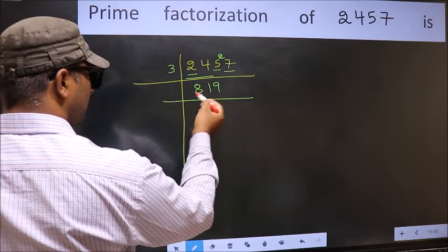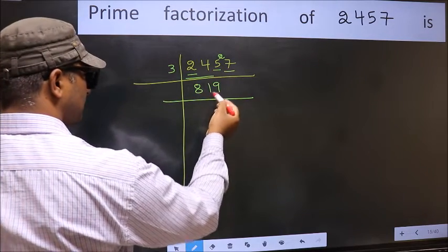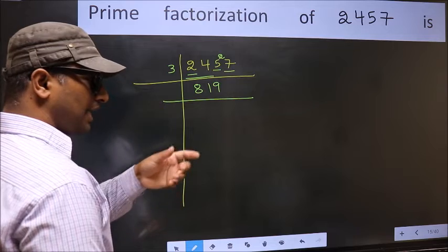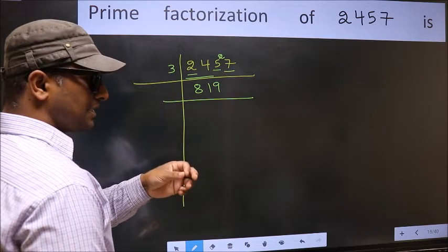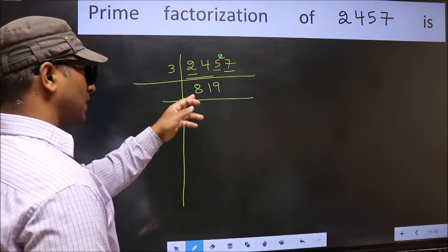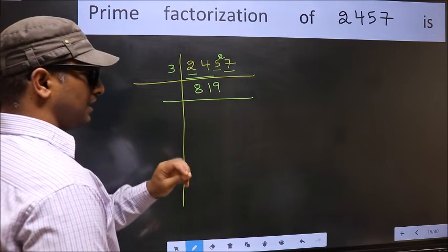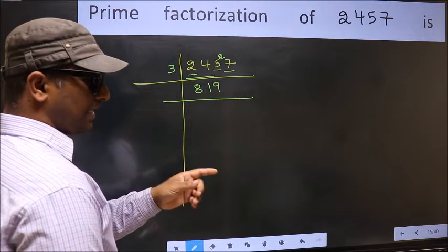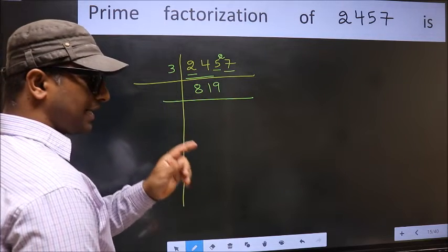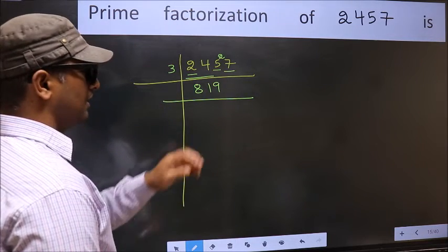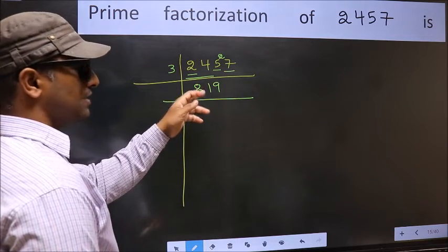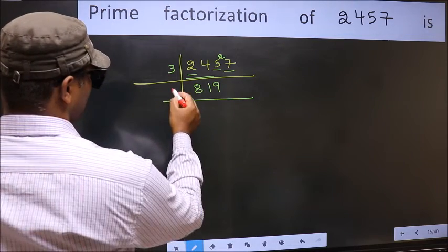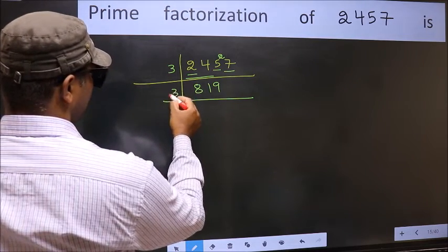Now to check whether 819 is divisible by 3 or not, we add the digits: 8 plus 1 plus 9 equals 18. And 18 is divisible by 3, so this number is also divisible by 3. So take 3 here.